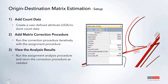To set this up, we're first going to look at how to add that count data to the network. In this case we're going to use a user defined attribute, or UDA, to store all that information. Then we'll look at adding the matrix correction procedure within the procedure window, and finally look at the results so we can compare the assigned volume to the counts we've added.